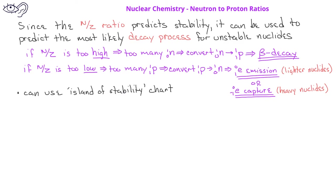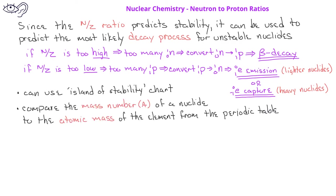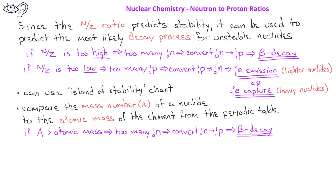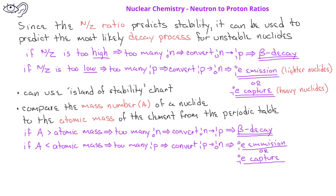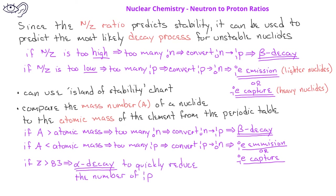However, if the chart of the island of stability is not available, it is possible to compare a nuclide to the atomic mass on the periodic table for that element, since the atomic mass is an average of the mass of the stable nuclides for an element. If the mass number (A value) for a nuclide is greater than the atomic mass on the periodic table, this indicates too many neutrons, and we'll need to convert a neutron into a proton by beta decay. If the mass number is less than the atomic mass, this indicates too many protons, and we'll need to convert a proton into a neutron — either by positron emission for lighter elements or through electron capture. If the atomic number is greater than 83, the most likely mode of radioactive decay will be alpha decay, since this quickly reduces the number of neutrons and protons in the nucleus.